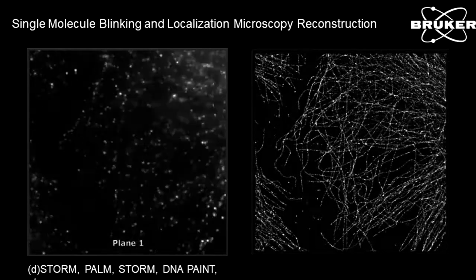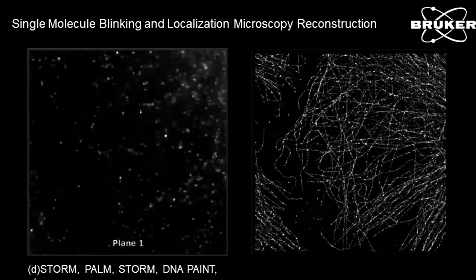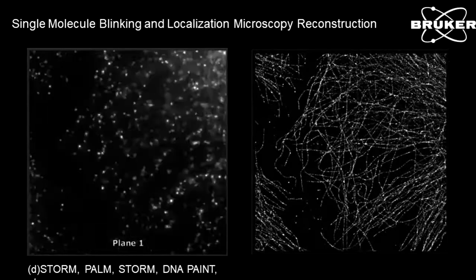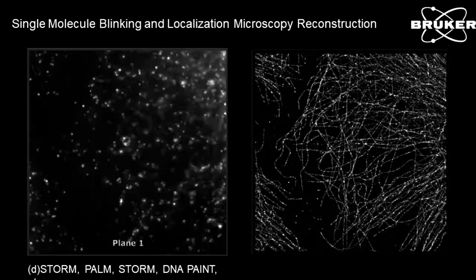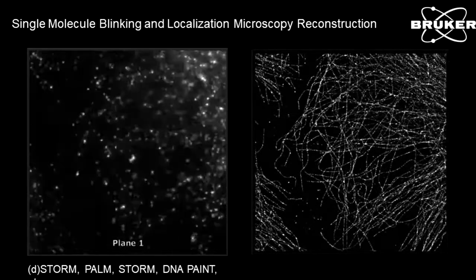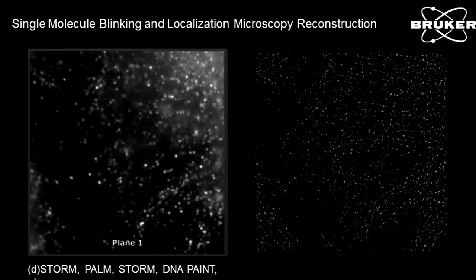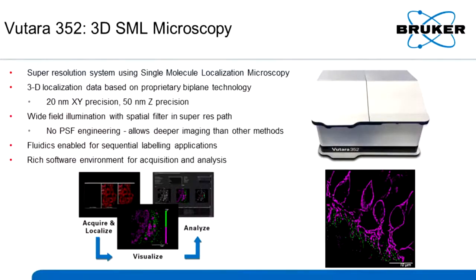There are various techniques to get fluorophores to blink: PALM, STORM, or DNA Paint. The idea is just to activate a few fluorophores at a time and then localize them. The VUTARA is a super resolution system designed specifically for single molecule localization. It has 3D localized data based on proprietary biplane technology, which I can go into more detail at the system if you're interested.